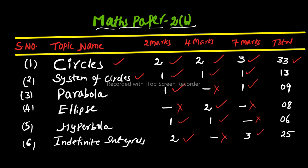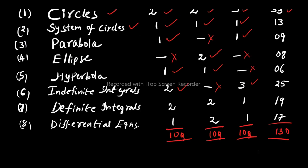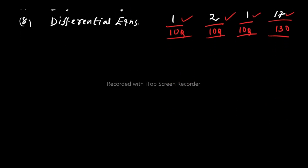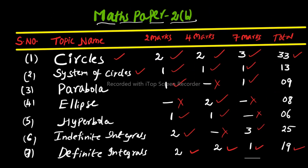Definite Integrals: 2 two-mark, 2 four-mark, and 1 seven-mark question — totalling 19 marks weightage. The last topic is Differential Equations: 1 two-mark, 2 four-mark, and 1 seven-mark question — totalling 17 marks. This is a very easy topic because the major difficult portion has been deleted from Differential Equations. This completes Maths Paper 2B. Each section has 10 questions in total.